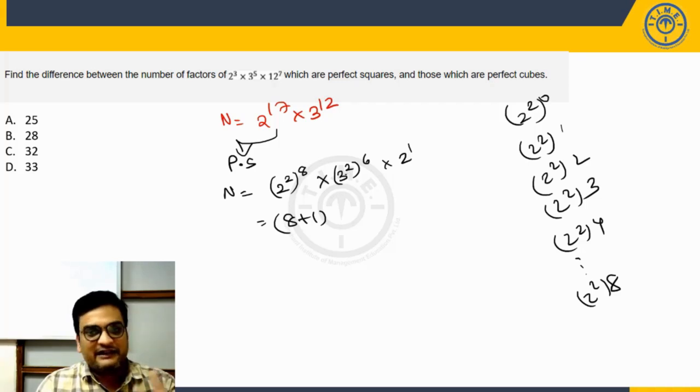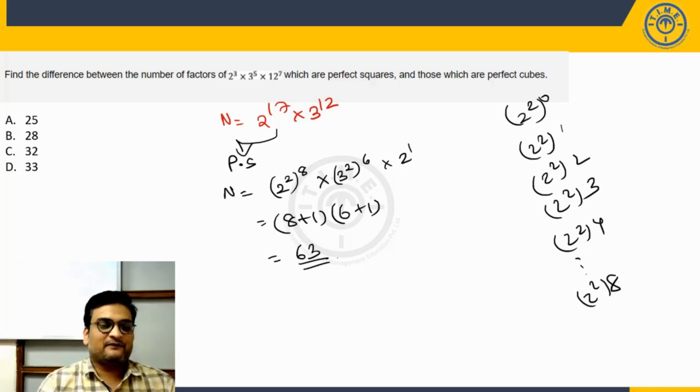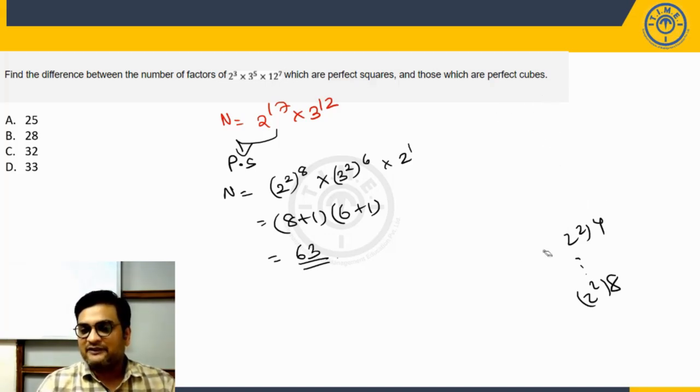And similarly, any factor or possibility that you take out of this is going to be a perfect square, 6 plus 1. So that means, number of factors which are perfect squares are going to be 9 into 7, 63. So one part of the question is done.